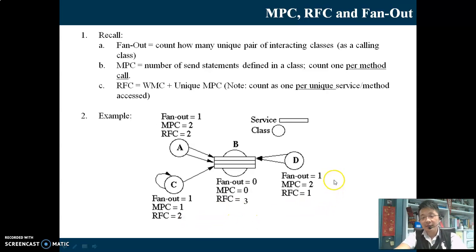Finally, for Class D, the fanout is 1 because the other involved class with D is B, which there is only one, even though there are 2 MPCs. For the fanout, we just count the class. For MPC, there are 2 method calls to the same class of B. Notice the arrow is pointing to exactly the same method inside B.